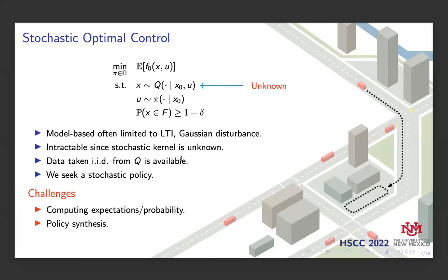Instead, we assume that we have access to data taken IID from the stochastic kernel queue, and we use that data to formulate and solve an approximate reformulation of the original problem. This problem is difficult since we don't have prior knowledge of the system dynamics, and also because we seek a stochastic policy, which is more difficult.